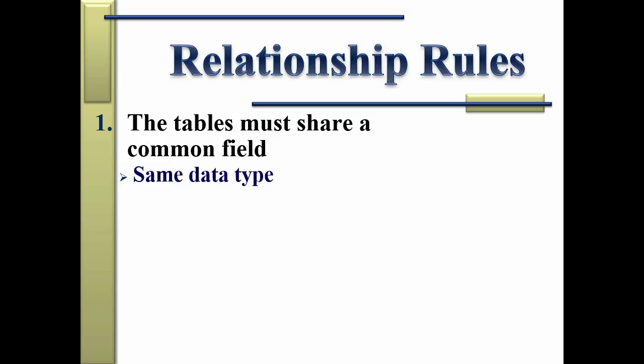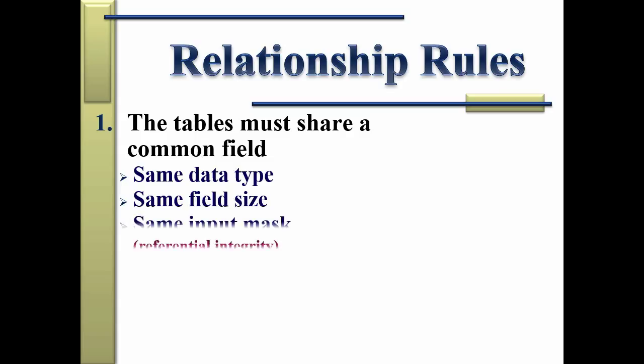Double check that you're following those rules. The tables must share a common field with the same data type and the same field size. If you've set long integer in one table, it's long integer in the other. If you have a text field set to two characters in one table, you have to set it to two characters in the other table. The third rule is you have to have the same input mask — a pattern you establish for a field such as a social security number. That has to be in place when you create referential integrity on your relationships.